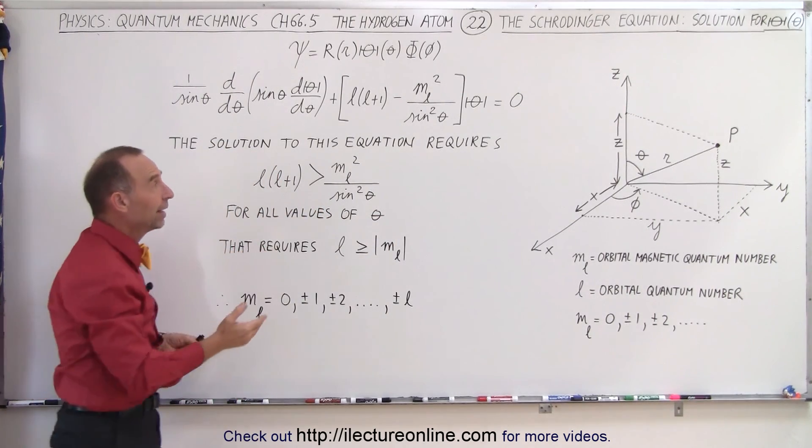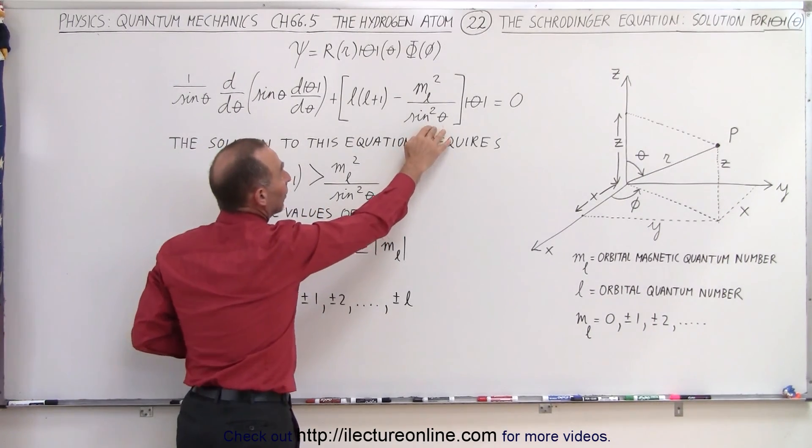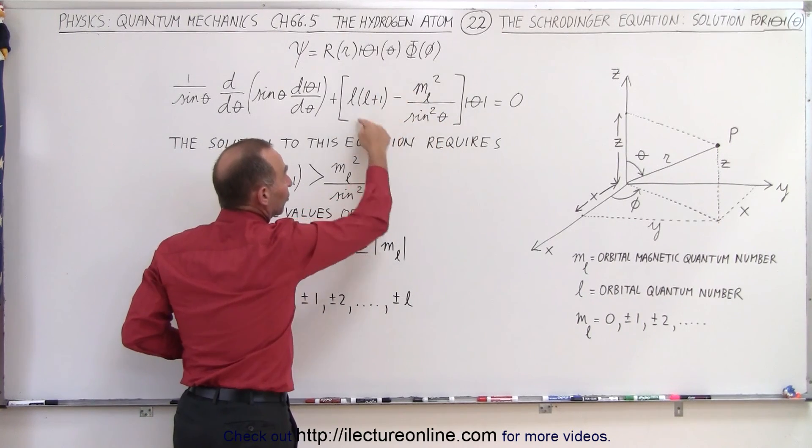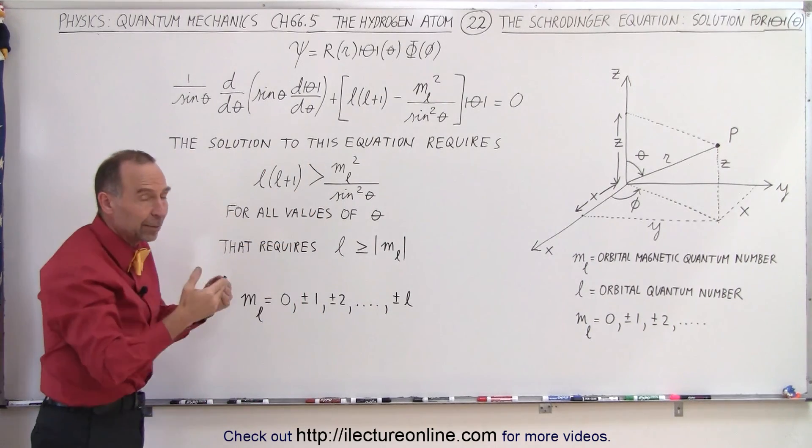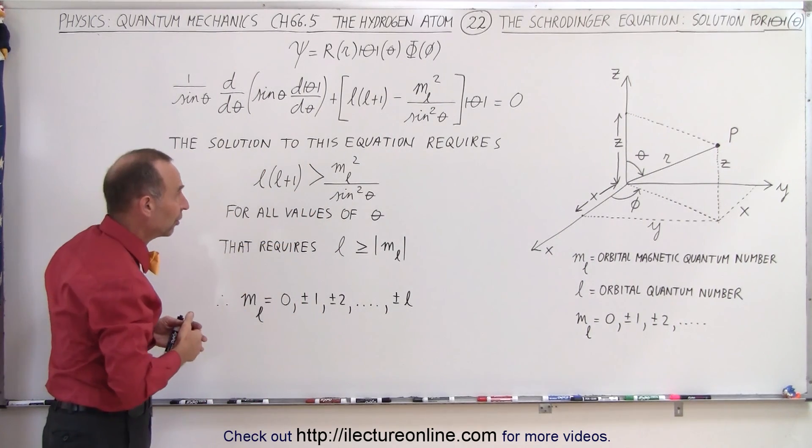Now notice that theta can be zero, and then we end up with m sub l squared divided by zero, and of course this could only be true if m sub l at that point is equal to zero in the limit as theta approaches zero.